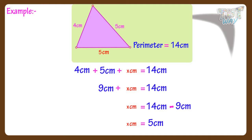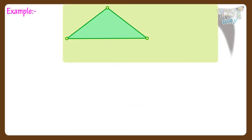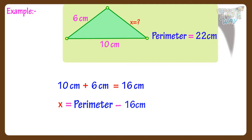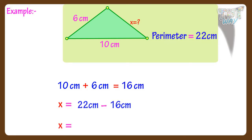Now let's take another example. Here we have a triangle and its perimeter is given — it is 22 centimeters. The lengths of two of its sides are given: 10 centimeters and 6 centimeters. We have to find the length of the third side. The length of the third side equals the perimeter minus the sum of the other two sides. The sum of the other two sides is 10 plus 6, which equals 16 centimeters. So the length of the third side equals 22 minus 16, which is 6 centimeters.